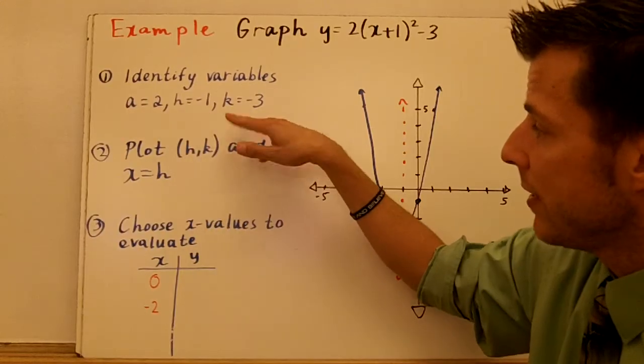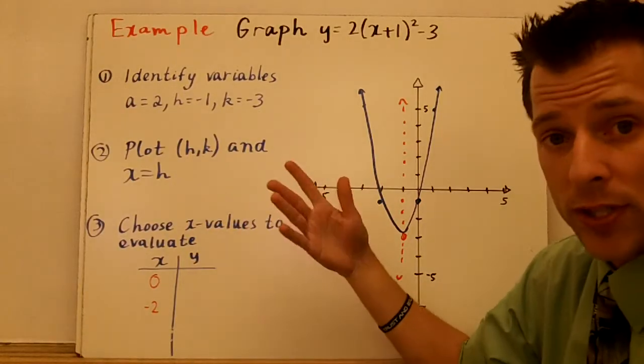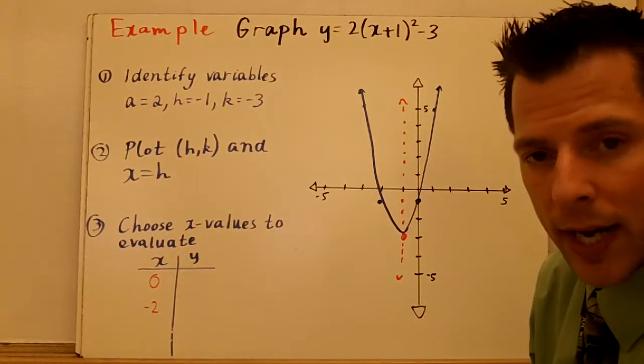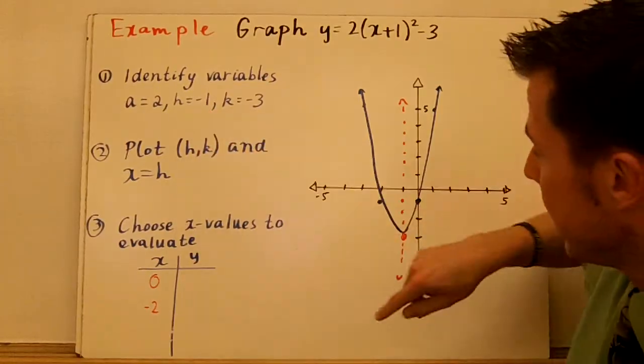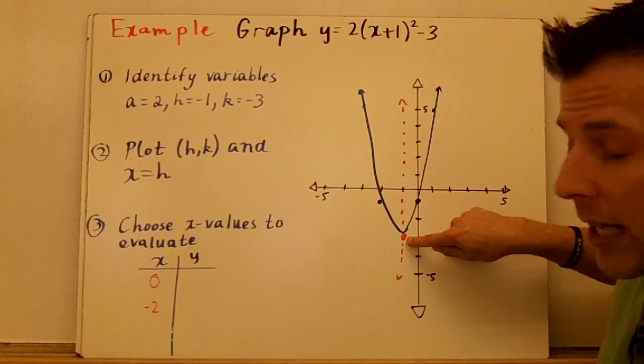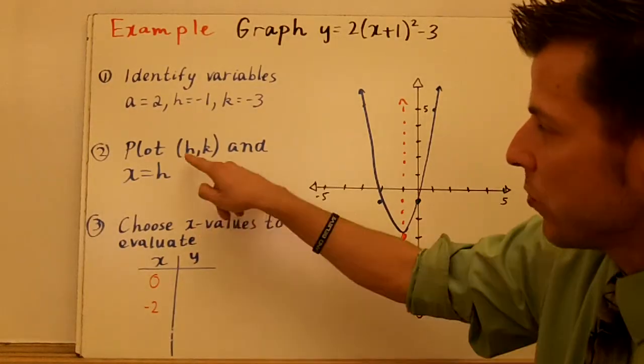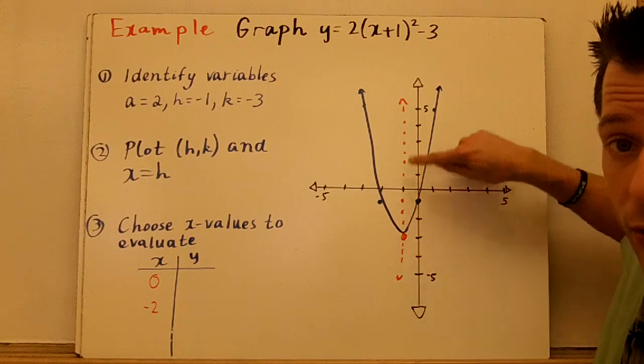It's moving to the left 1 and down 3 from our parent function. That's the idea when we compare this, always to the parent function. I plot my vertex and I plot my axis of symmetry. The vertex is negative 1, negative 3. There's my vertex. My axis of symmetry is whatever h is. H is negative 1. There's my vertical line through negative 1.